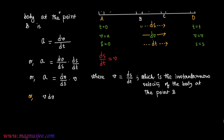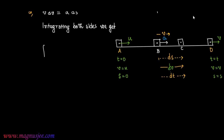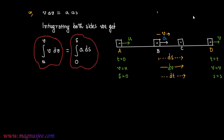Therefore, v·dv = a·ds. Integrating both sides, the integral of v·dv from u to v equals the integral of a·ds from 0 to s. Here u and v are the lower and upper limits for the velocity integration, and 0 and s are the lower and upper limits for the displacement integration.